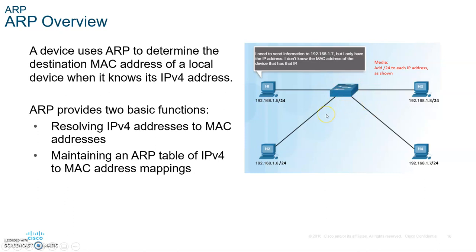He broadcasts to all hosts in the LAN saying: whoever has this IP address — host 1 knows the IP address of host 4 — please give me your MAC. Host 4 sends back his MAC, and host 1 puts it on the frame and sends the frame to the switch. The switch looks at the destination MAC address, sees that it's host 4, knows which port host 4 is on, and sends it to him.